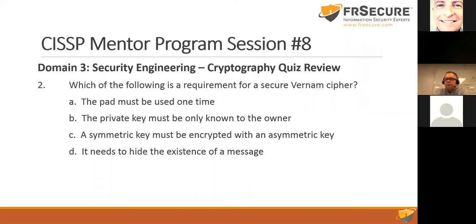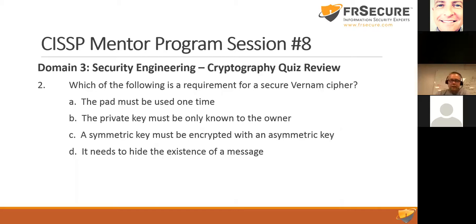Which of the following is a requirement for a secure Vernam cipher? If you remember, it was the one-time pad machine. The pad must be used one time — that is true. The private key must only be known to the owner. Asymmetric key must be encrypted with an asymmetric key; hiding the existence of a message is steganography. So one-time pad would be A.